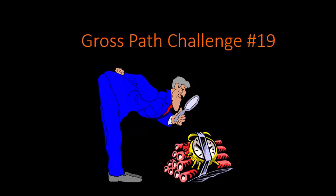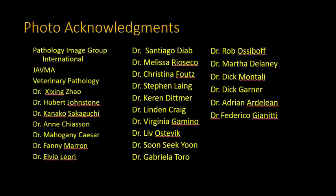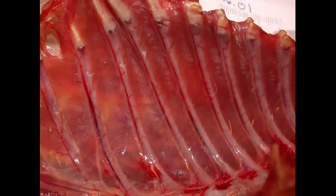Hello, it's Bruce Williams, and it's Friday, so that means it's time for another Gross Path Challenge. Today's challenge is number 19, coming from a test from the 2015 Descriptive Vet Path course given in Saskatchewan, Canada. As I do at the beginning of all my lectures and these Gross Path Challenges, I want to thank those people who provided their images, either directly or through online collections. Get out your pens and pieces of paper. Give yourself 60 to 90 seconds for each question. Don't forget to pause and come back when you're ready to hear the answer.